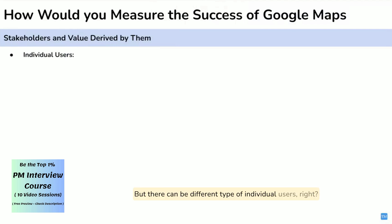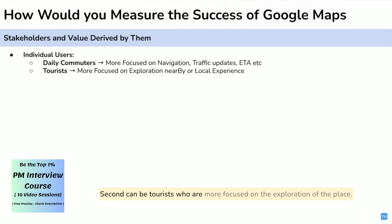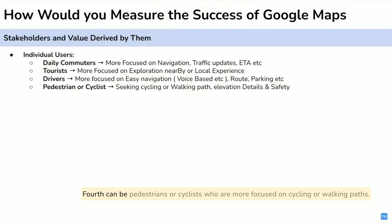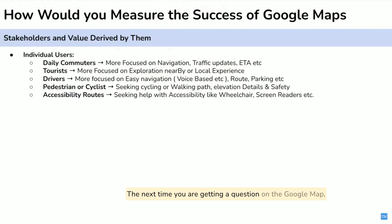There can be different types of individual users. Daily commuters are more focused on navigation. Tourists are more focused on exploration. Drivers are focused on easy navigation and fuel-efficient routes. Pedestrians or cyclists are focused on cycling or walking paths. And finally, users seeking accessibility paths. Notice how we have broken down the user segment into personas — you can utilize these next time you get a Google Maps question.